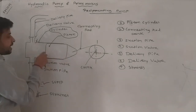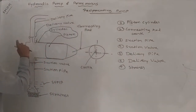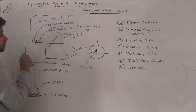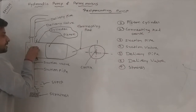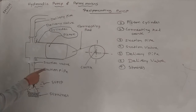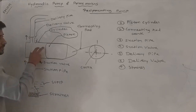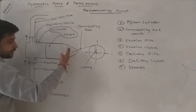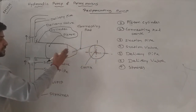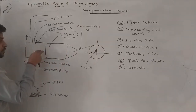When the piston moves, a vacuum is created. The delivery valve, being a non-return valve, closes. The low pressure created causes fluid to enter through the suction pipe — the suction valve (one-way valve) opens. As the piston moves leftward and rightward, the fluid is pressurized and discharged.